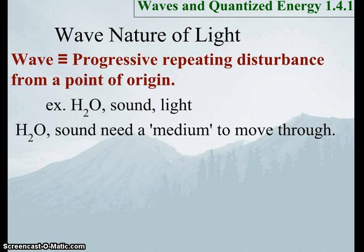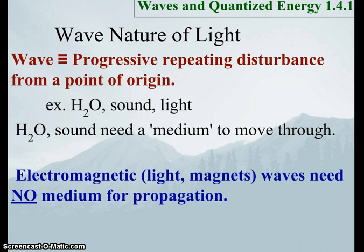Water waves and sound waves need some sort of medium to move through. You need the water to transmit the wave. Same thing with sound, you need something to transmit those waves. However, light, and the light that we're going to care about, which is known as electromagnetic waves, so it's actually light waves and magnetic waves, need no medium for propagation. A simple way of remembering this is that the light coming from the sun travels through the vacuum of space, no problem.